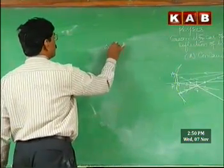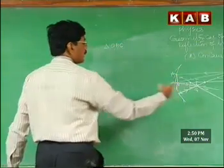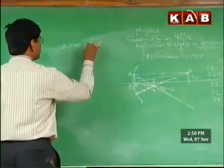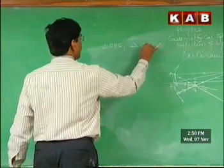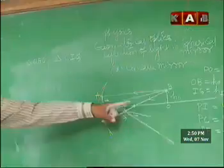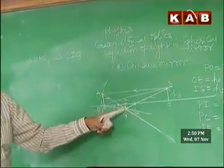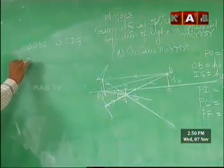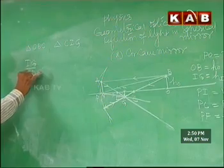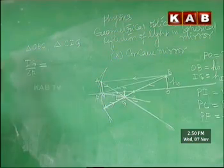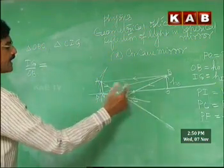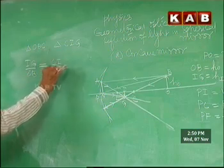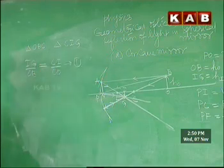We consider triangle OBC and triangle CIG. These two are similar triangles. Therefore, IG by OB is equal to CI by CO. Call it equation number 1.